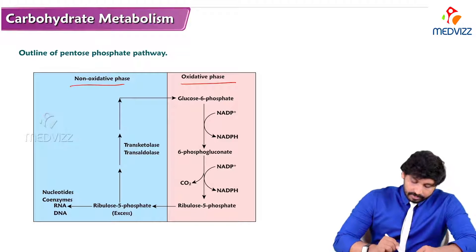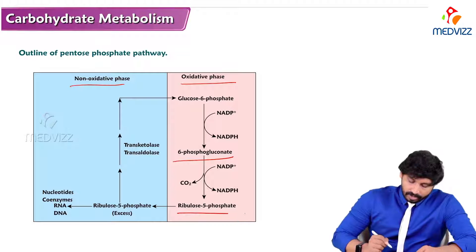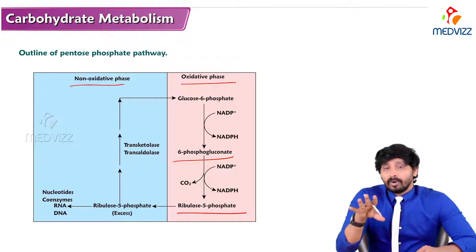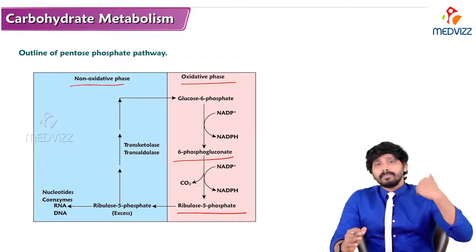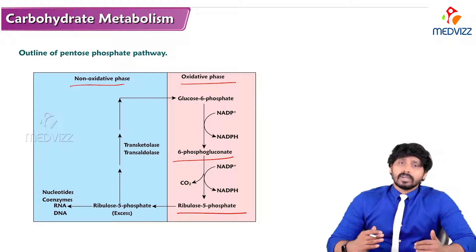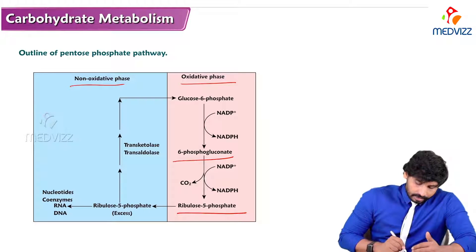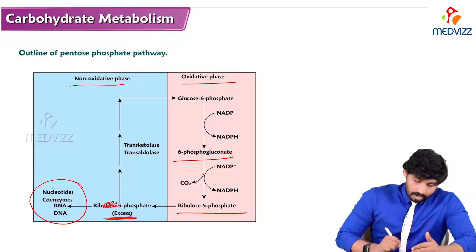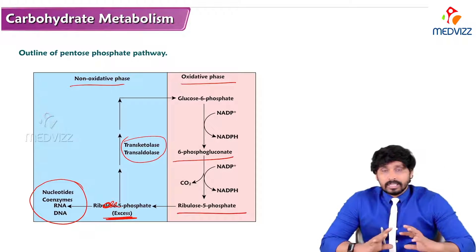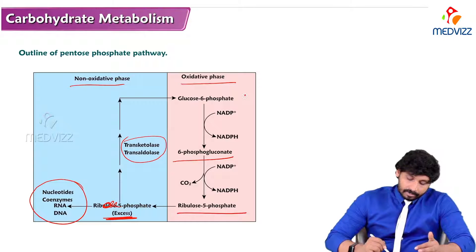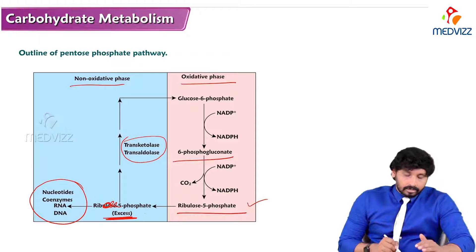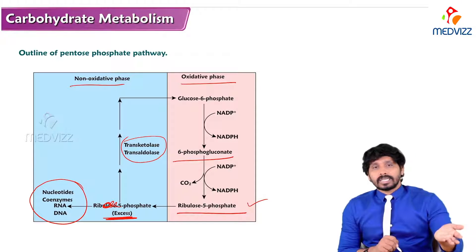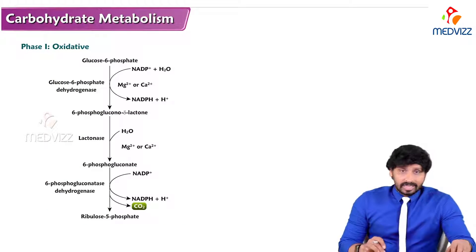In the oxidative phase, glucose 6-phosphate is converted to 6-phosphogluconate and then to ribulose 5-phosphate. Ribulose is the keto form, and keto forms of pentoses are not useful — we need the aldehyde form. This ribulose 5-phosphate is then converted to ribose 5-phosphate. In the non-oxidative phase, ribose 5-phosphate is converted back to glucose 6-phosphate through reactions involving the enzyme transketolase.